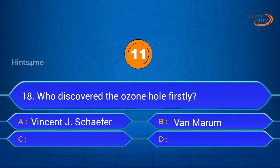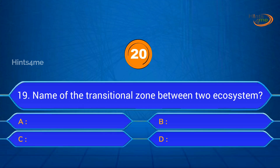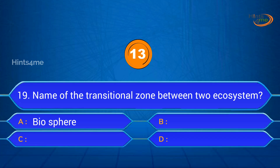Question 18: Who discovered the ozone hole firstly? A. Vincent G. Schaffer, B. Van Marum, C. Joe Farman, D. Charles Fabry. Answer: Joe Farman.